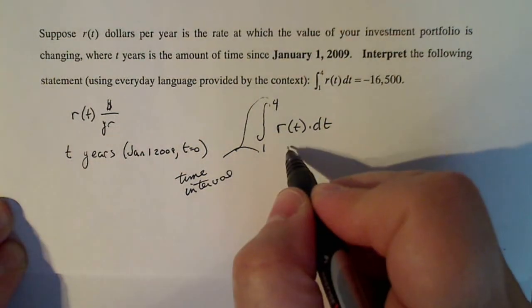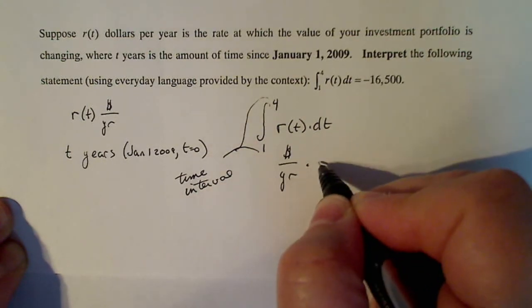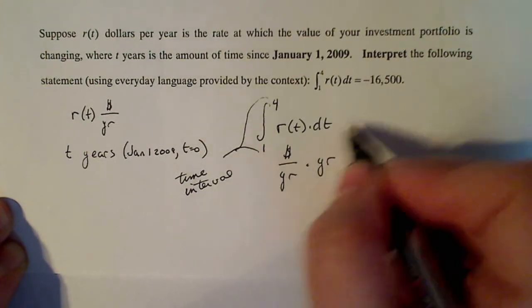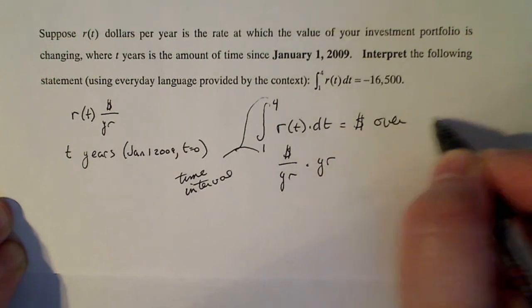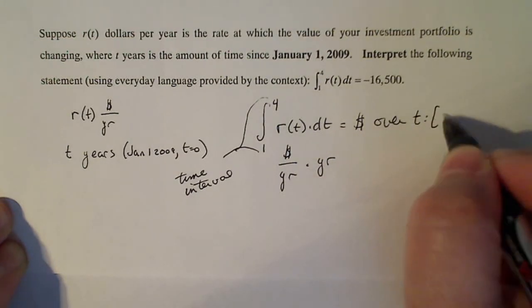R(t) is in dollars per year. dt is years. So the product of that is giving me dollars over a time period of one to four.